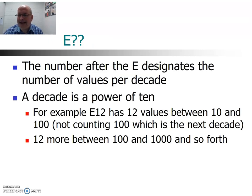So what is this E-series, and more particularly, what is the number after it? The number after the E represents the number of values in every decade of possible values. For example, going from 10 ohms up to 100 ohms, there would be 10 possible values — and 100 is not included there, as that starts the next decade from 100 to 1,000. If you divide a decade up 12 ways, you get the E12 series; divide it 24 ways and you get the E24 series, and so on.